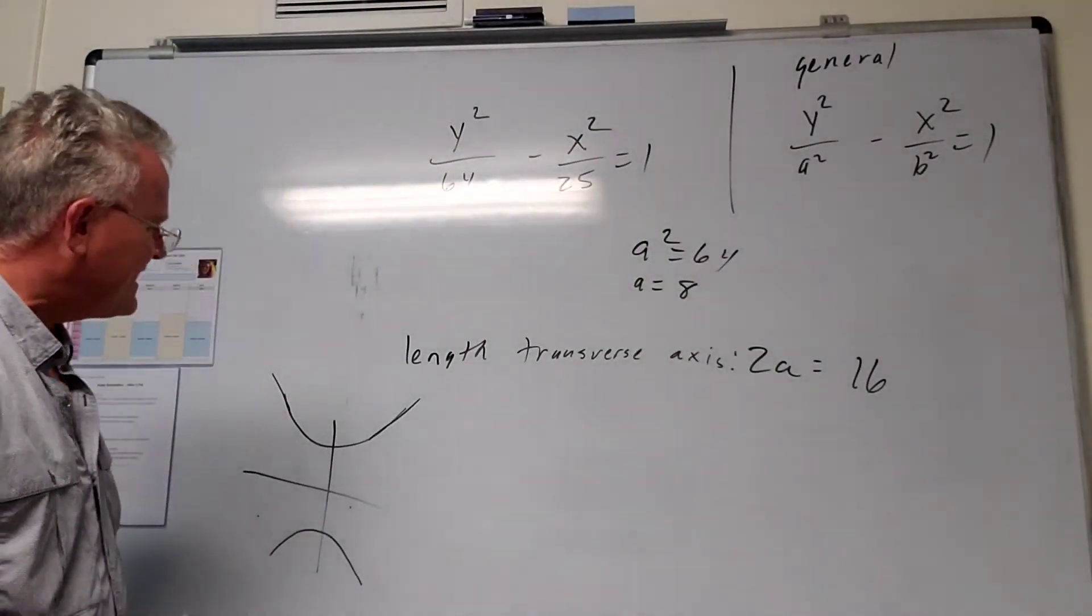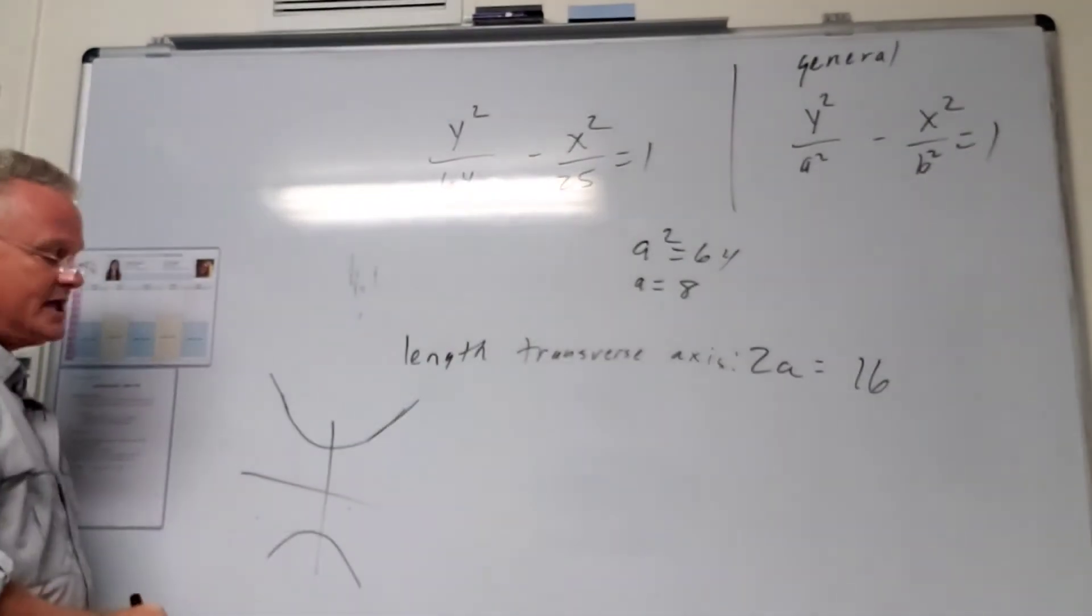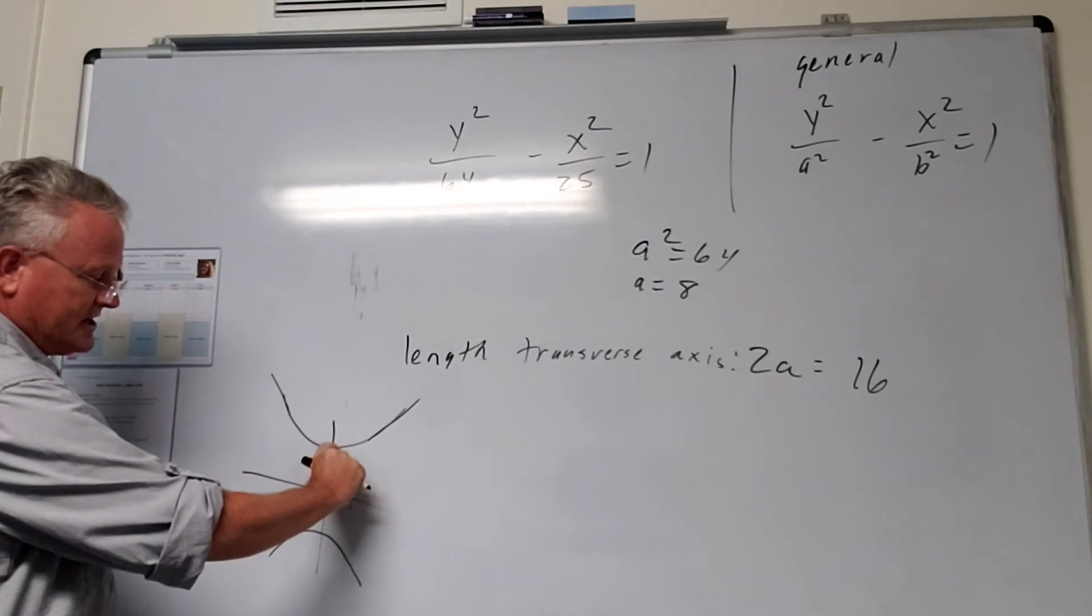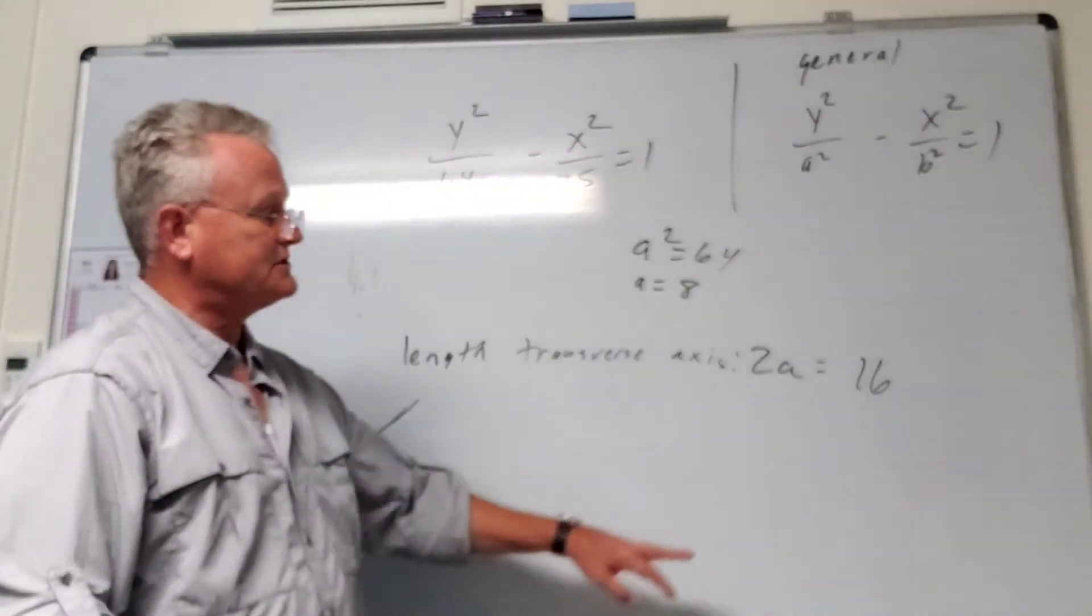So how does that fit in? Well, because the y-squared comes first, this opens up and down, and this distance right here is 8. This 8 and this 8 add up to a total distance of 16.